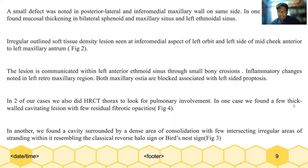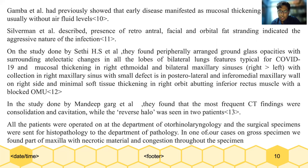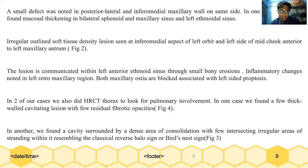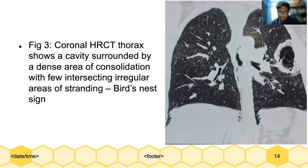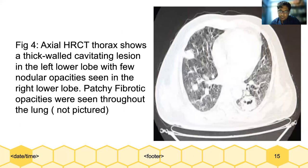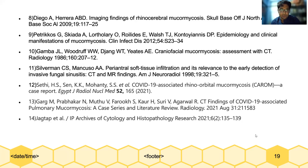In two of our cases, we did an HRCT thorax. We found few thick-walled cavitating lesions with fibrotic opacities in one. In another, we found a cavity surrounded by a dense area of consolidation with few intersecting irregular areas of stranding, resembling the classical reverse halo sign, or the bird's nest sign. This is the bird's nest sign, and in another case we found a thick-walled cavitating lesion with few nodular opacities in the right lobe. Patchy fibrotic opacities were seen throughout the lung.